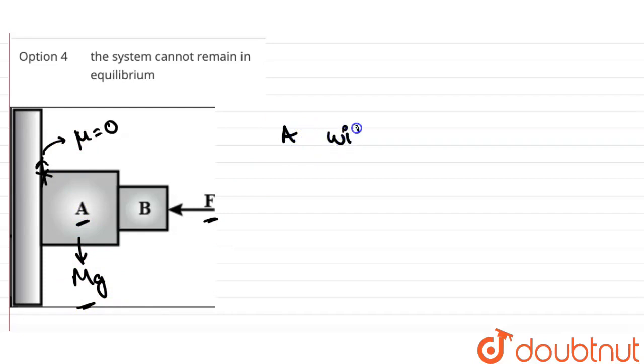Now also, B will also perform free fall because it is also experiencing this mg force in the downward direction. If A is also moving in the downward direction with acceleration g, and due to its own weight, B is also moving in the downward direction with acceleration g.